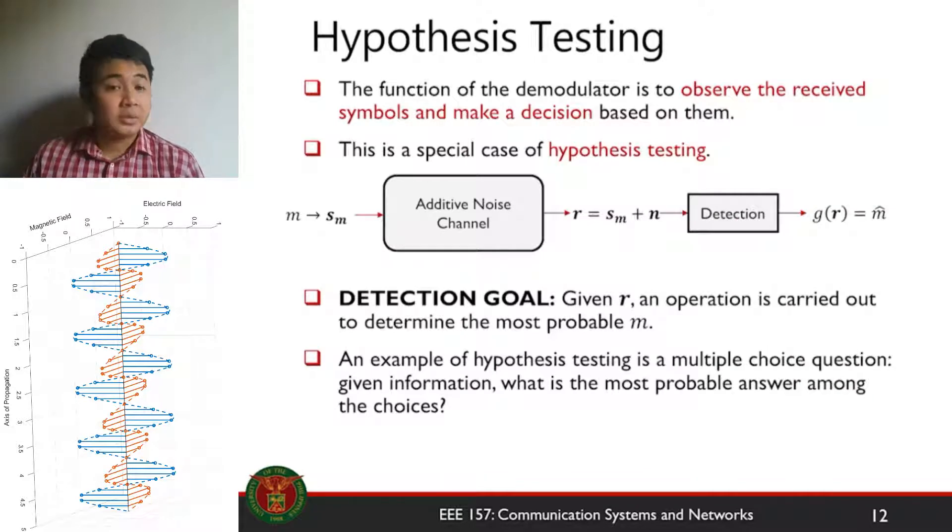Now let's move on to how the receiver demodulates it. The goal of the detection, given R, an operation is carried out to determine the most probable M. This is how hypothesis testing works. An example of hypothesis testing is when you try to answer a multiple choice question. Given the information, given the question, what's the most probable answer among the choices? That's when you think about maybe letter A has an 80% probability that it's right. That's an example of hypothesis testing.